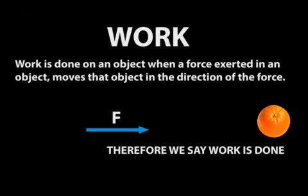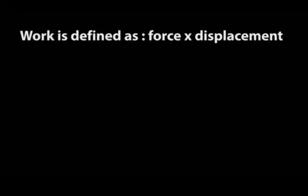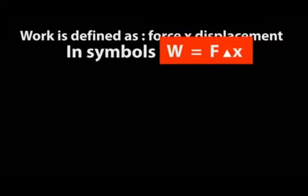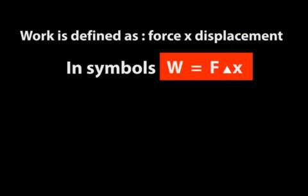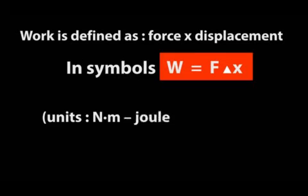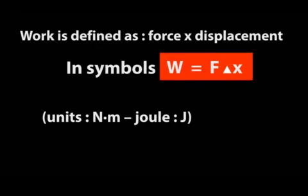Work is defined mathematically as force times displacement. In symbols, work W equals F multiplied by Δx. The triangular sign is referred to as delta, so that is delta x, which refers to change in displacement. Force is measured in newtons and displacement is measured in meters, therefore the unit of work is newton-meters, which is simply joules.